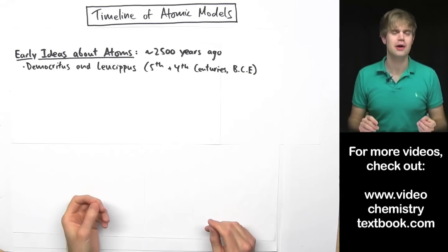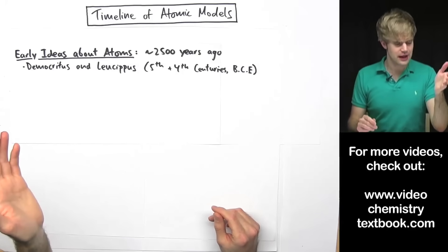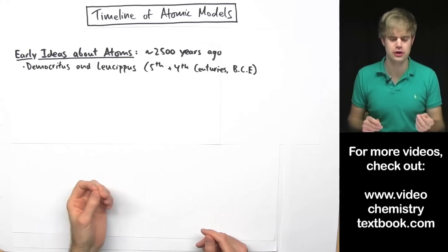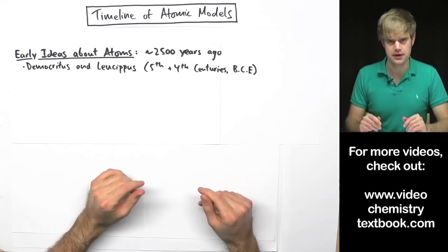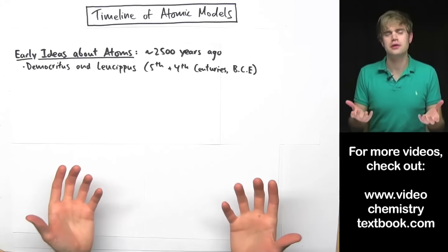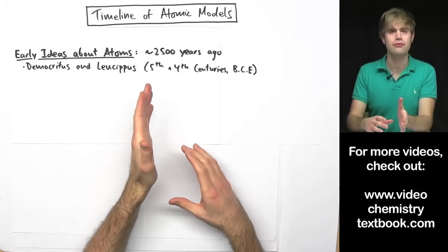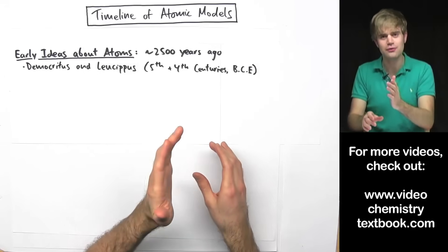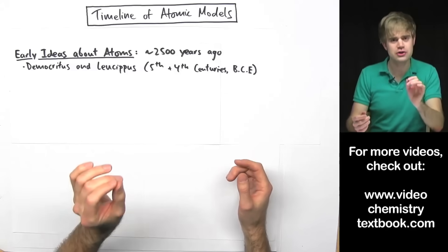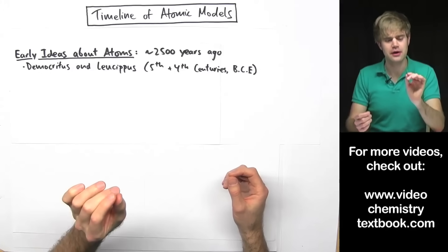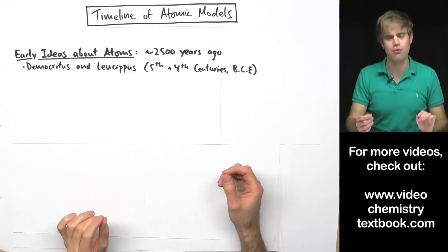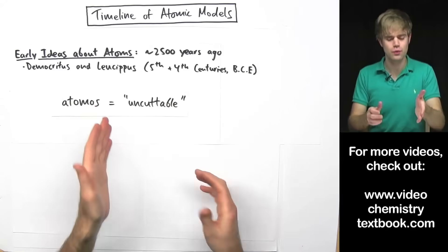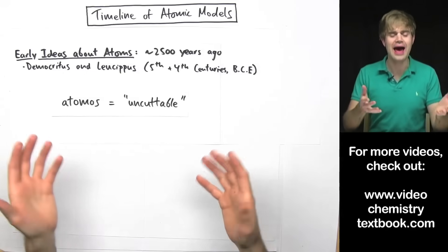Now the first people to really talk about the idea of atoms were the ancient Greek philosopher Democritus and his teacher, Leucippus. They lived about 2,500 years ago. And Democritus said something like this. He said, imagine you have an object, like say a slice of bread, and you cut that in half. And then you take half of that and you cut it in half. And then you take half of that and, well, you get the idea. Eventually, he said, you're going to come to something that you can't cut in half anymore. And he called these objects, he called them atomos, which means uncuttable, and it's where we get the word atom from.